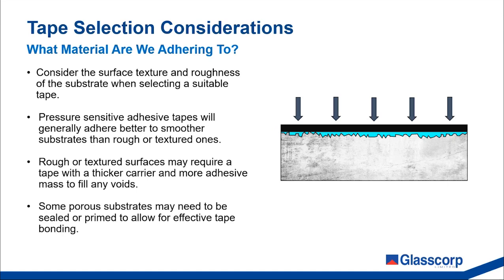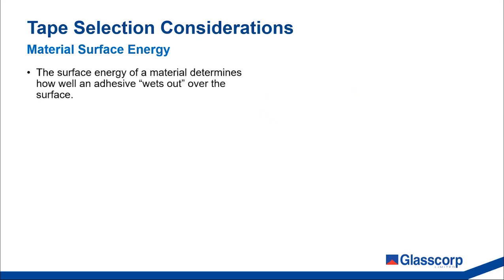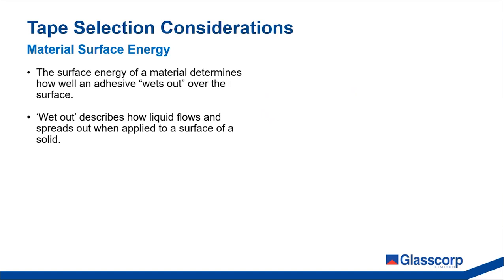Certain porous substrates may need to be sealed or primed first to allow for effective tape bonding. When talking about adhesion, an important material property you'll often see mentioned is surface energy. The surface energy of a material determines how well an adhesive will wet out over the surface. Wet out describes how a liquid flows or spreads out when applied to the surface of a solid — and good wet out is required to form an adhesive bond.